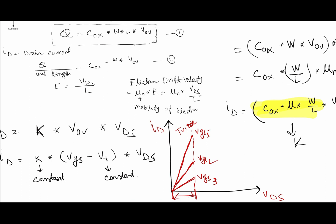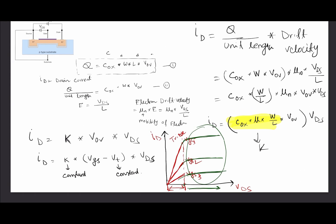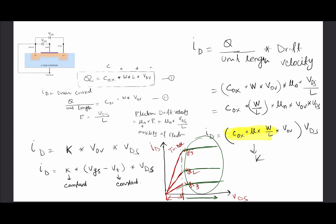In my next video, I will explain what happens when we increase VDS further. The current will reach saturation. I will construct the current equation for the saturation region, explain why the current saturates, and show why it becomes constant at that point.